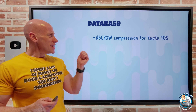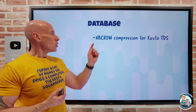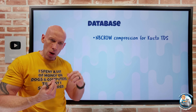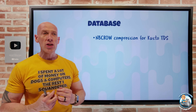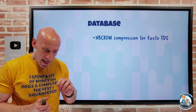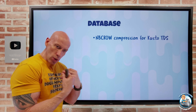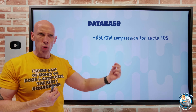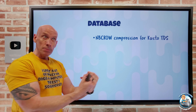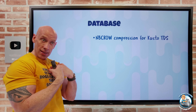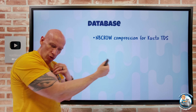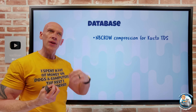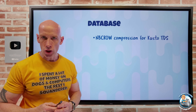On the database side: NBC row compression for Kusto TDS. NBC stands for null bitmap compressed row — if there's a null value, instead of taking up a byte, it now takes up one bit, saving seven bits per null. If you have a lot of nulls, that adds up. TDS is the Tabular Data Stream Protocol used from an MS SQL client talking to a SQL database. Azure Data Explorer (Kusto) exposes a TDS endpoint, so your MS SQL client can talk to Azure Data Explorer, and now it will take advantage of this compression — more efficient bandwidth use when nulls are present.